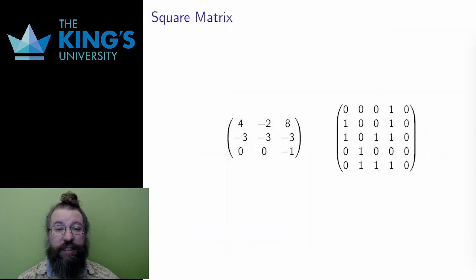Now I want to specify some particular kinds of matrices, and the names I will use for them in this course. A matrix is square, if it has the same number of rows and columns.